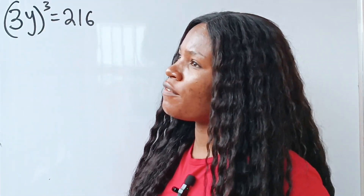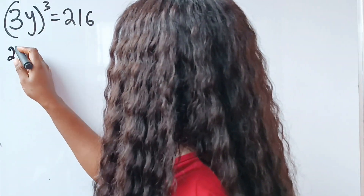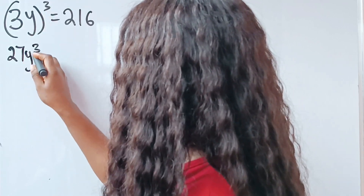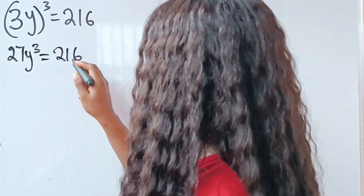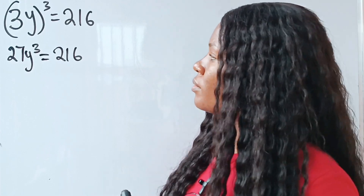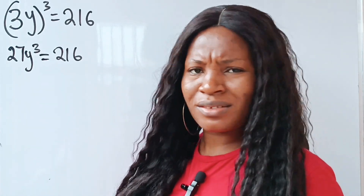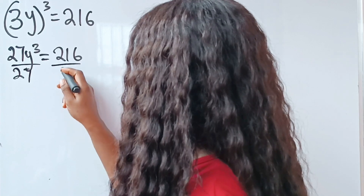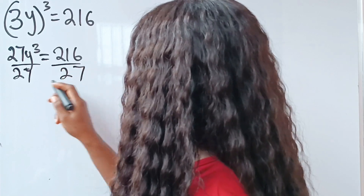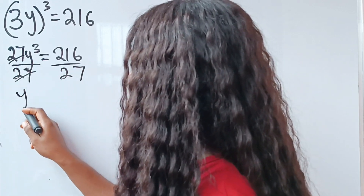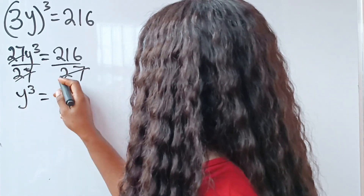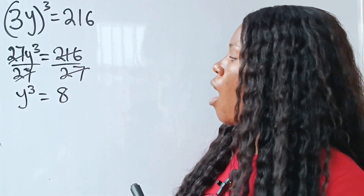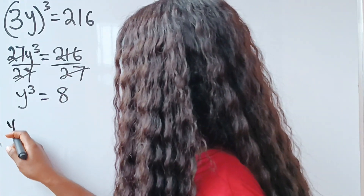3 to the power of 3 is going to give us 27, so we have 27 here and y to the power of 3 is equal to 216. Now let's divide by 27. When we divide, we have y to the power of 3 equals 8.